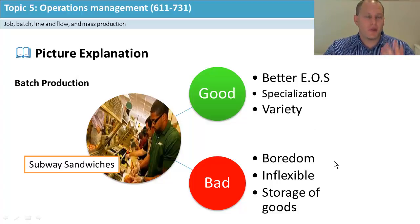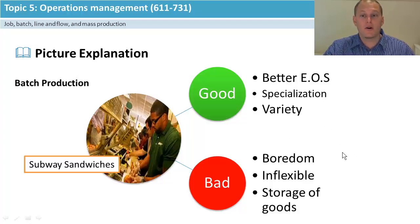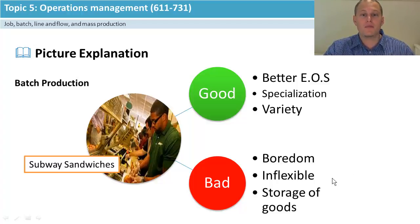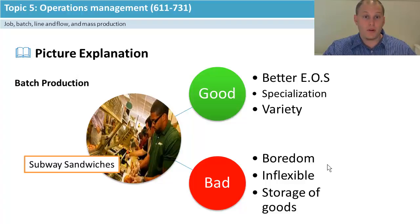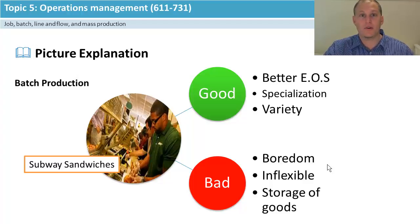The downside for batch production is boredom — it can really demotivate workers if they're aiming for higher parts of Maslow or Herzberg's motivators. It can also be inflexible: you can have whatever you like as long as it's one of the six main breads, or one of the seven main meats — you can't deviate outside those batch categories that have been designed.